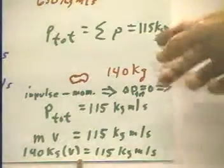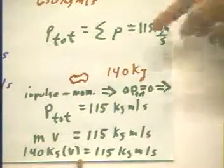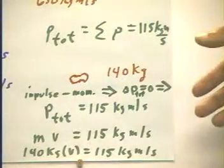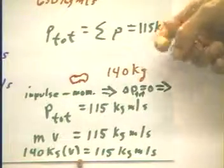So we've used the idea that the total momentum remains constant immediately before and immediately after collision. There's no change, and we've used that with the assumption that the masses stick together, giving us the 140 kilograms to determine the velocity of the two masses immediately after collision.